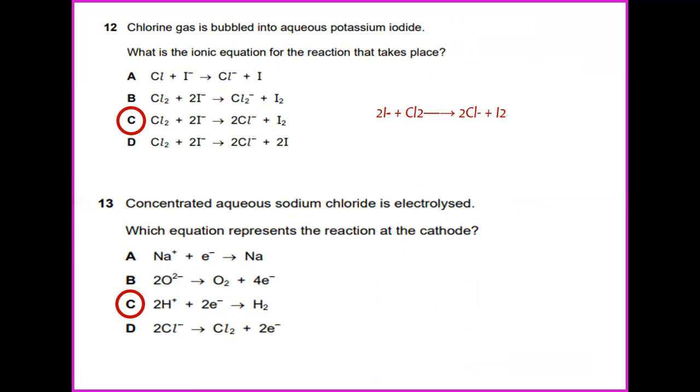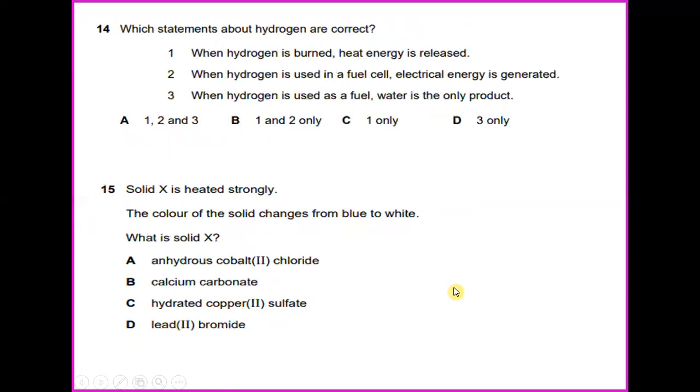Concentrated aqueous sodium chloride is electrolyzed. Which equation represents the reaction at the cathode? You have 2H positive plus 2 electrons to form H2. So the answer for number 13 would be C.